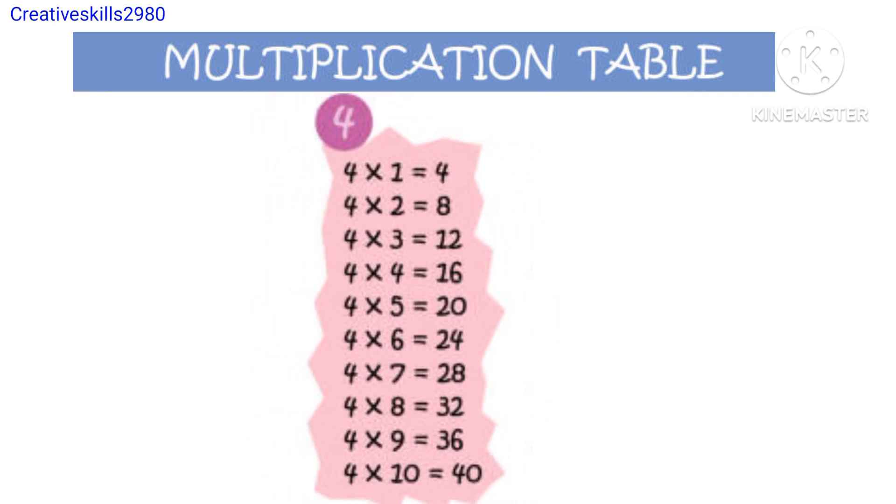4 1s are 4, 4 2s are 8, 4 3s are 12, 4 4s are 16, 4 5s are 20, 4 6s are 24, 4 7s are 28, 4 8s are 32, 4 9s are 36, 4 10s are 40.